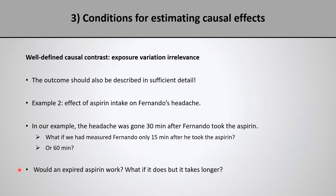In almost any practical situation, the definition of being exposed or unexposed has some ambiguity and vagueness. So in practice, we will almost always need the exposure variation irrelevance assumption — but of course this assumption is going to be more plausible in situations where the groups were defined with enough detail. In the next video, I will wrap up our discussion about well-defined causal contrasts. Stay tuned for that.